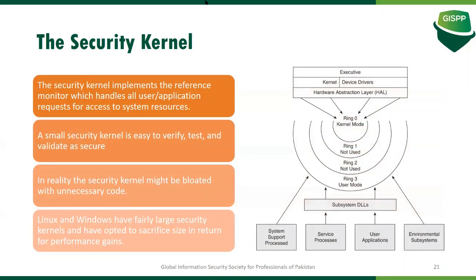The security kernel implements the reference monitor, handling all user and application requests for access to the system. It operates at ring zero, with the operating system executive above it, then kernel and device drivers, and a hardware abstraction layer giving access to hardware. User applications access hardware through DLLs. Linux and Windows have fairly large security kernels, but in general the security kernel should be as small as possible — the bigger the security kernel, the less secure it will be. In some environments you may need to compromise on this for greater functionality.